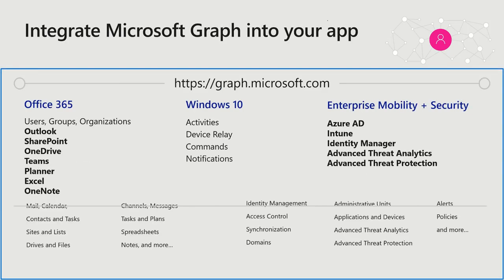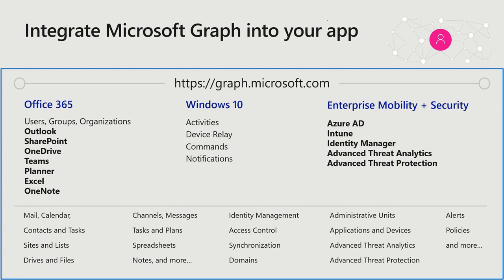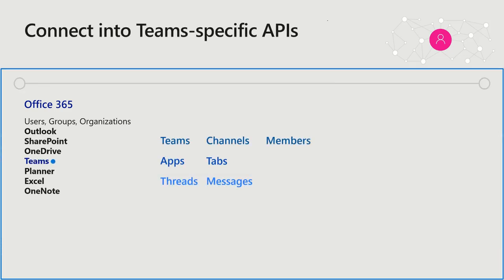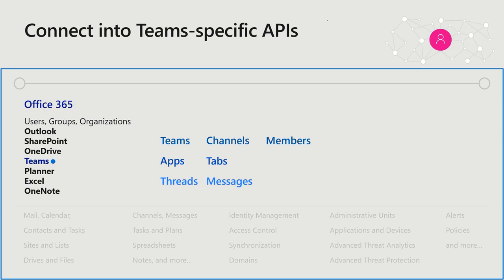You can leverage the full breadth of the Graph in your app with Office 365 resources like email, calendar, people, sites, files, and devices. But we also have a dedicated set of APIs for Teams. Under the Teams resource, we have APIs dedicated for team management, channels, members, apps, tabs, threads, and messages. This is an area where you should expect to see more APIs coming down the pipeline in the future as we create more opportunities to automate teamwork.